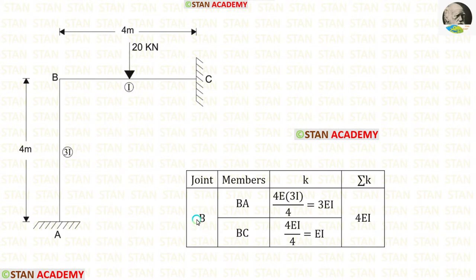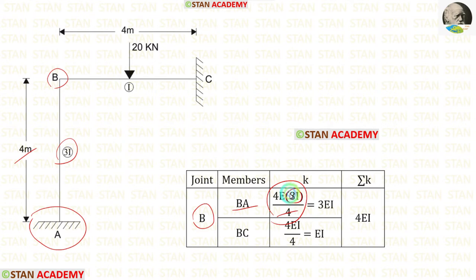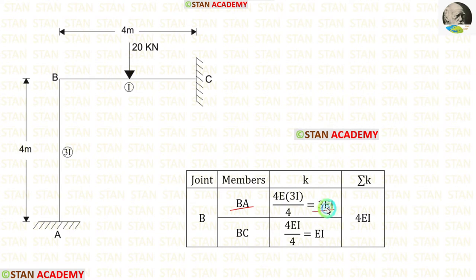Now let us find the stiffness at joint B. First, let us find the stiffness for member BA. From joint B we look at point A, where there is a fixed support. If the far end is fixed, the formula for stiffness is 4EI upon L. The length of BA is 4 and the moment of inertia is 3I, so we apply 3I. Finally, the stiffness of BA is 3EI.